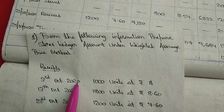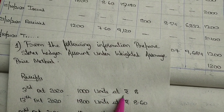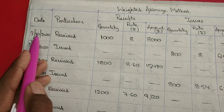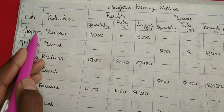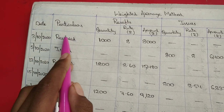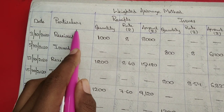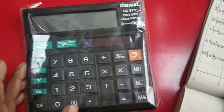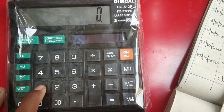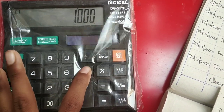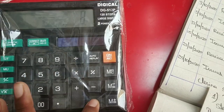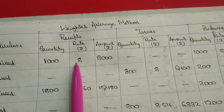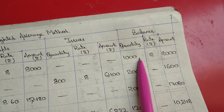On 3rd October 2020, we received 1000 units at Rs.8. In the receipts column: quantity 1000, rate 8, amount = 1000 × 8 = Rs.8,000. The balance column is the same: quantity 1000, rate 8, amount Rs.8,000.